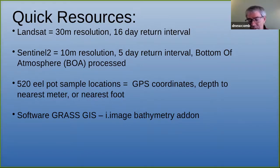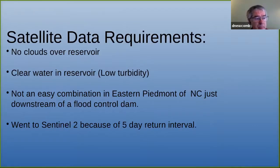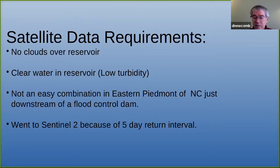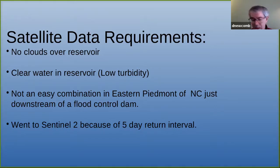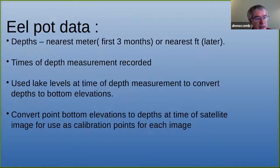The software I picked to look at was GRASS i.image.bathymetry — it's an add-on that goes with GRASS and calls R in the background. For the satellite data, I needed to have no clouds over the reservoir, and also no turbidity in the water. That's not an easy combination in eastern North Carolina, especially when you're just downstream of a flood control dam. So I went with Sentinel-2 because it has a five-day return interval and it's public data, so anyone can check what I did.